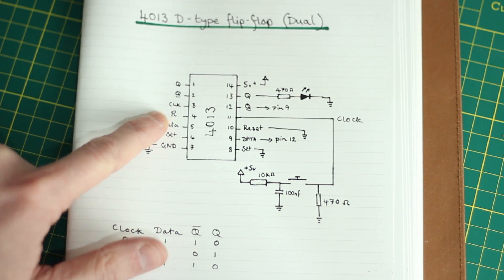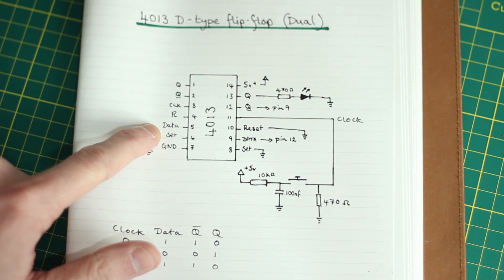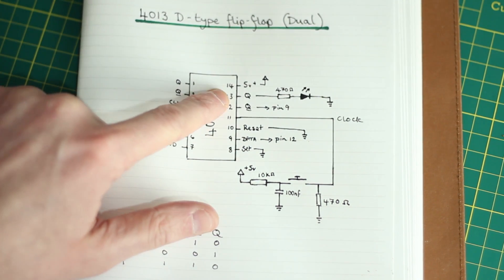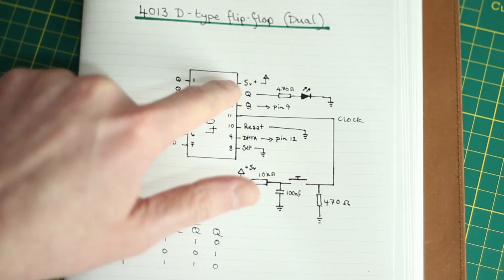This is your second output. You've got a clock pin, a reset pin, a data pin, a set pin, and your ground. And you've got power up here. And that's mirrored over this side, except for power and ground are swapped.